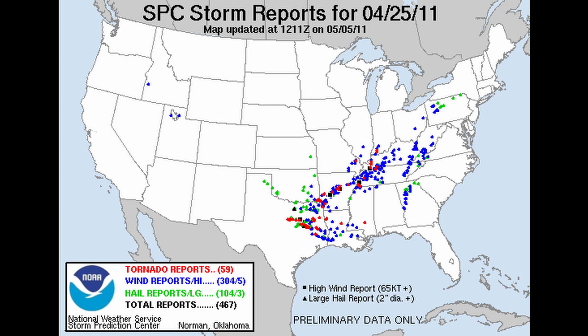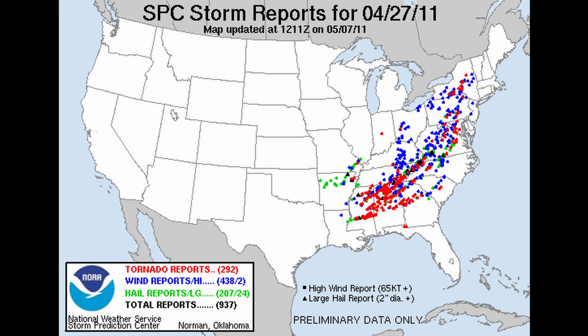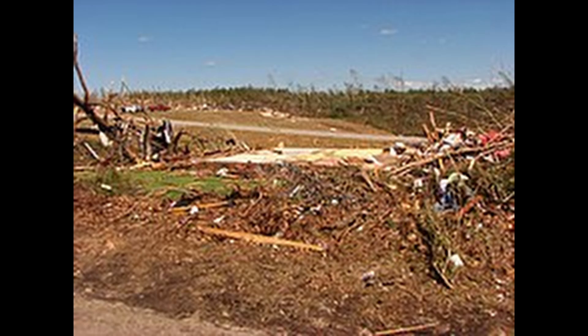The 2011 Super Outbreak, also known as the April 25–28th 2011 tornado outbreak, was one of the largest, deadliest, and most destructive tornado events in U.S. history. Occurring over the Southeastern United States, it produced 362 tornadoes over four days, resulting in 324 deaths and causing billions of dollars of damage.